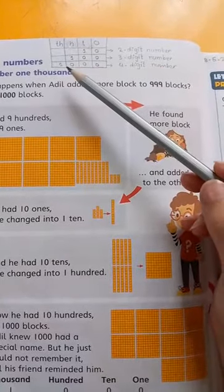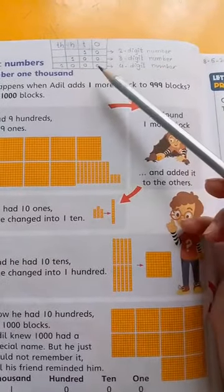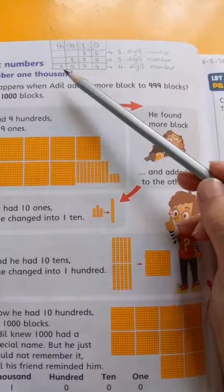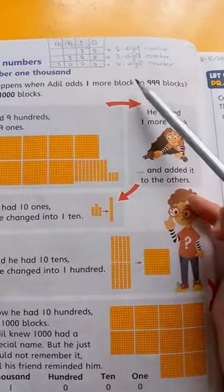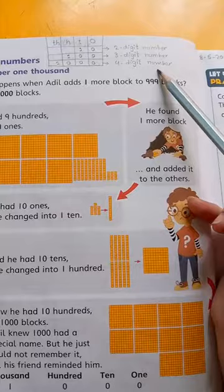Then we have, if we have one thousand, it has one, two, three, four numbers. To hum ye four digit number hai.